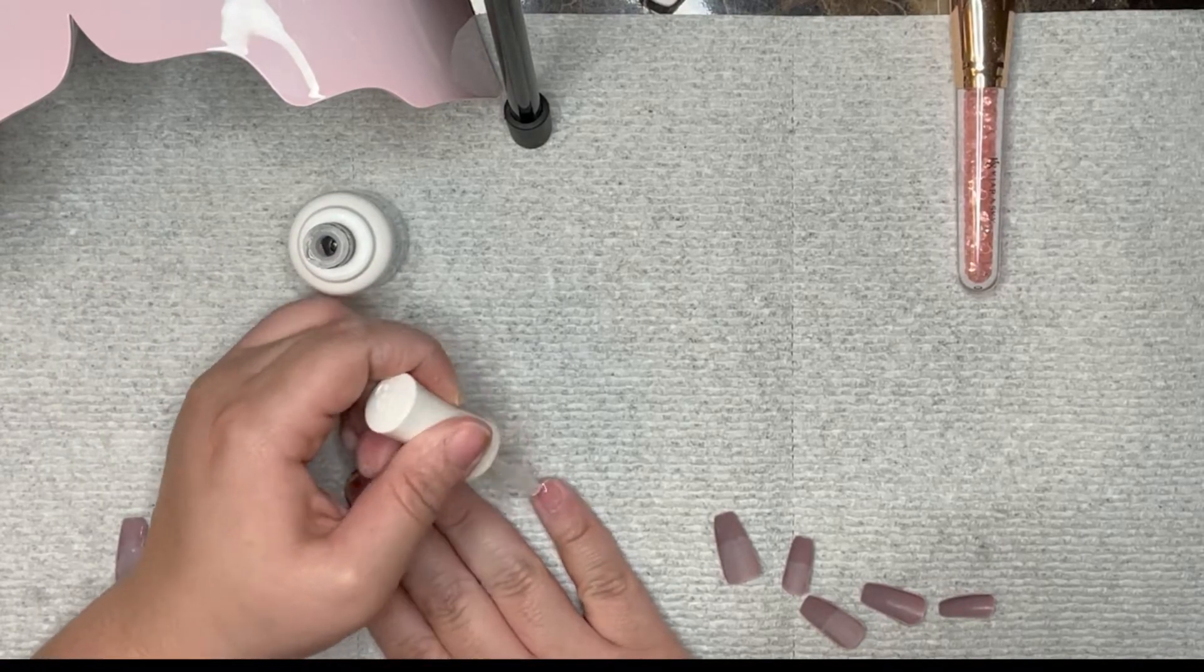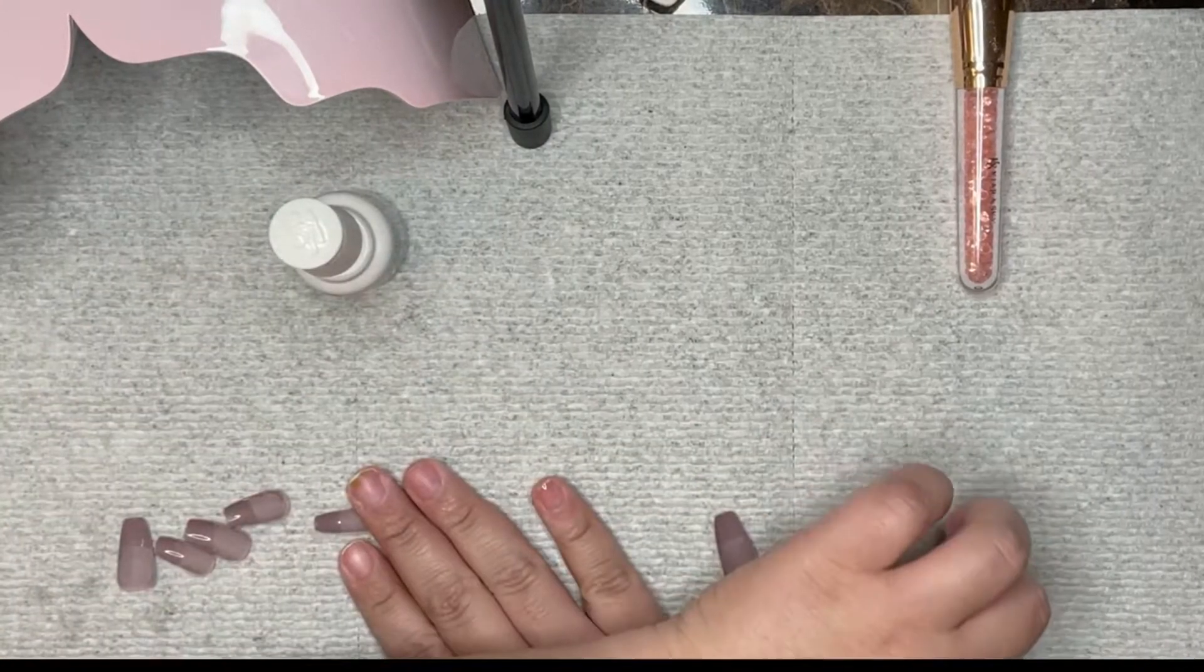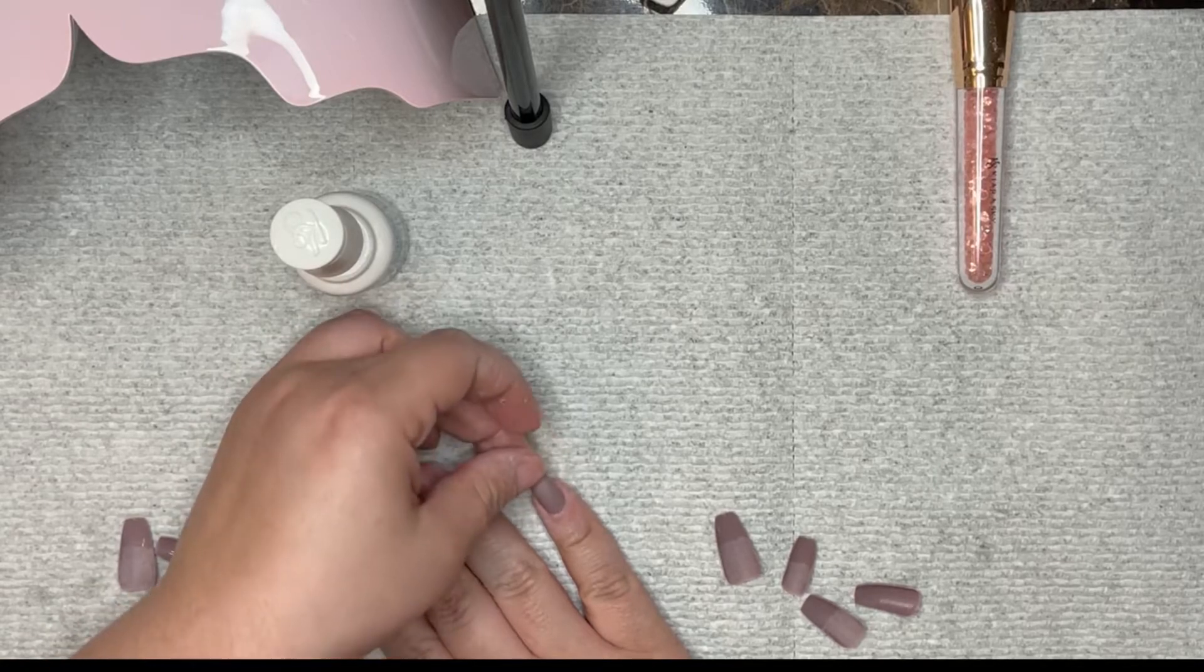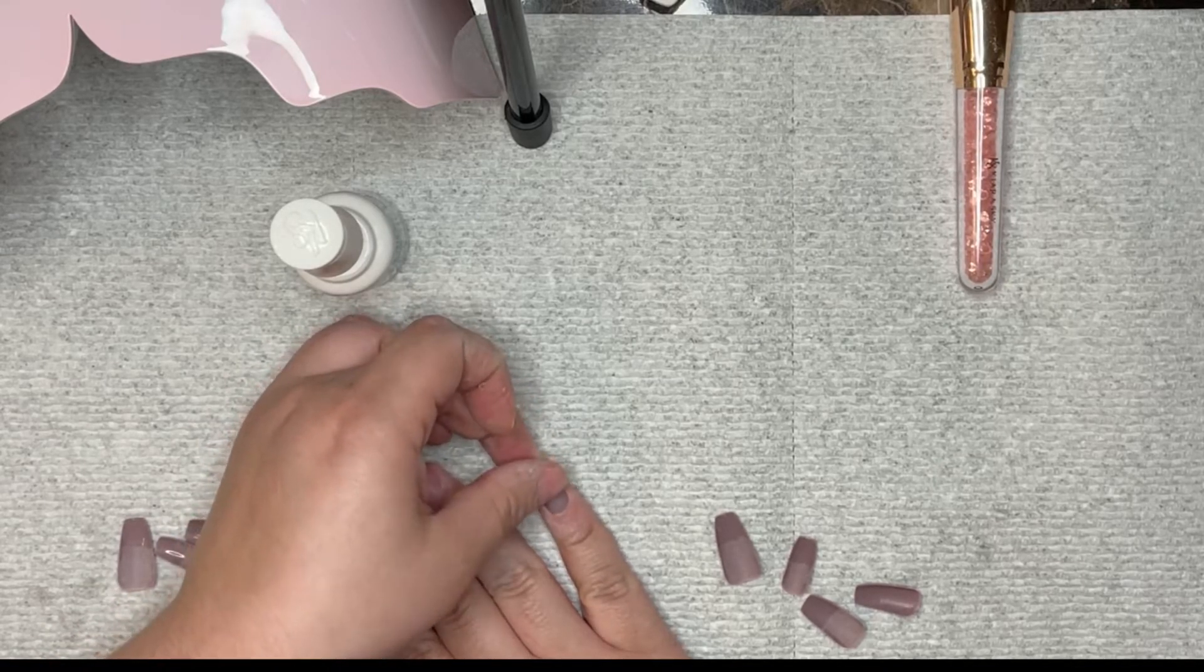As we know, dip powder base is a strong, strong glue. And the plastic tips that you buy from the store, they come with just regular nail tip glue.